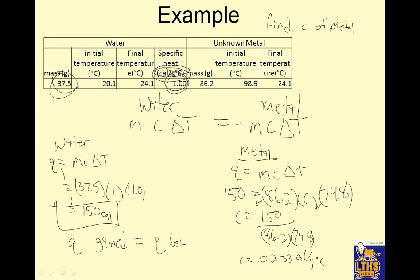150 divided by 86.2 divided by 74.8 is C equals 0.0233 calories per gram degree Celsius. Notice the units of specific heat are good to know. Notice this is small. Metals have a low specific heat. And water is bigger. Water has a high specific heat. That's it.